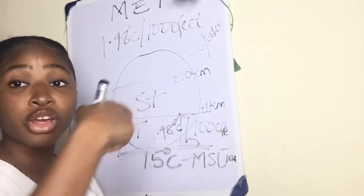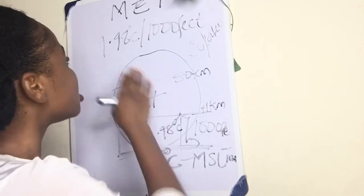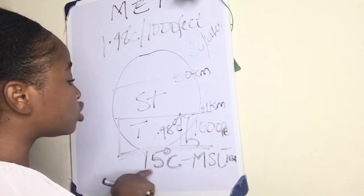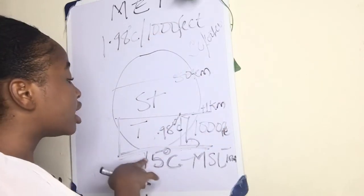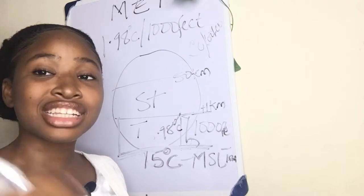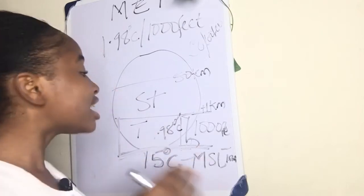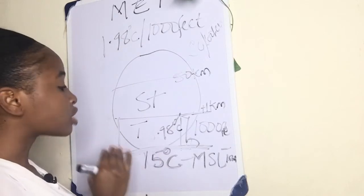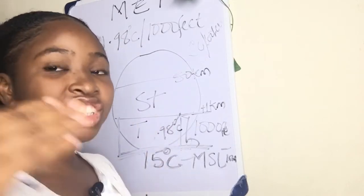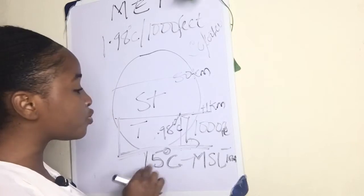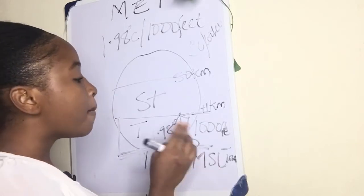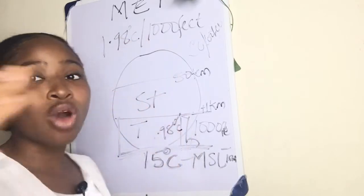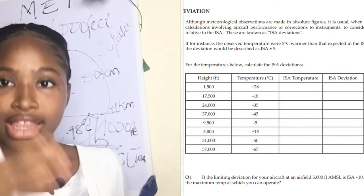We're going to use these facts to solve the questions. The ISA — International Standard Atmosphere — lapse rate is 1.98 degrees Celsius per 1,000 feet, and the ISA mean sea level temperature is plus 15 degrees Celsius. These are the two major values we'll use to solve all three questions.